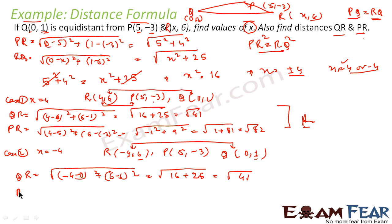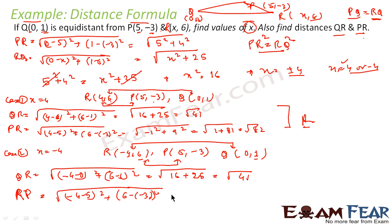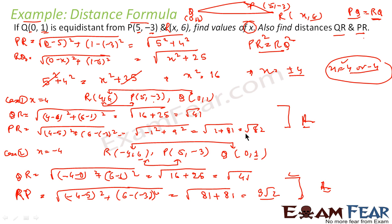Now for PR in Case 2: P is (5,-3) and R is (-4,6), so PR equals root of (-4-5)² + (6-(-3))², which is root of (-9)² + 9², giving root of 81 + 81, which is 9√2. So the answers are: x = 4 or -4; in Case 1, QR = √41 and PR = √82; in Case 2, QR = √41 and PR = 9√2.